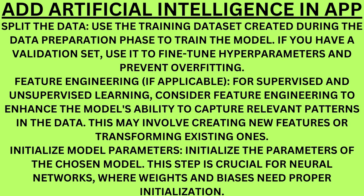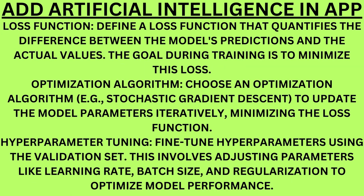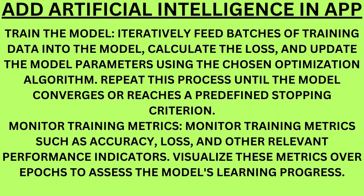Initialize model parameters. Initialize the parameters of the chosen model — this step is crucial for neural networks where weights and biases need proper initialization. Loss function. Define a loss function that quantifies the difference between the model's predictions and the actual values — the goal during training is to minimize this loss. Optimization algorithm. Choose an optimization algorithm such as stochastic gradient descent to update the model parameters iteratively, minimizing the loss function.